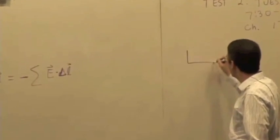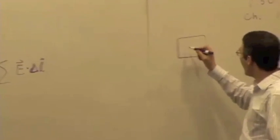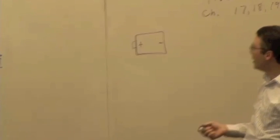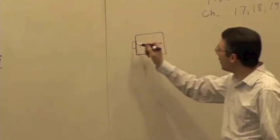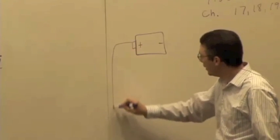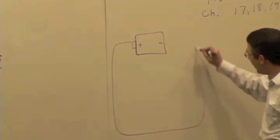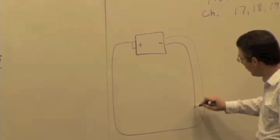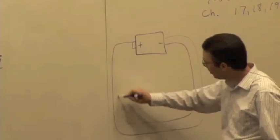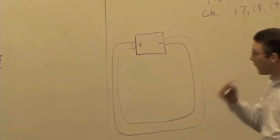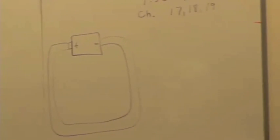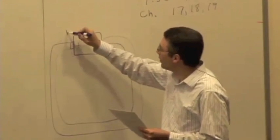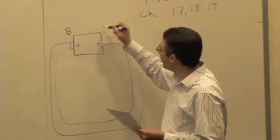So here is a battery. Let me just draw a little cartoonish picture. We have a positive terminal of the battery and a negative terminal of the battery. Just a wire — we can think of this as a simple, single wire of uniform thickness connecting one end of the battery to the other. And let's call this location B and location A.